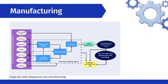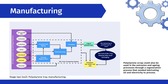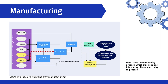Stage 2 — Polystyrene Tray Manufacturing. There were four processes in the trays' production system. In the extrusion and aging processes, the materials required are polystyrene granulate, cooling water, butane, lubricating oil, and electricity. Polystyrene scrap could also be used through a regeneration process requiring lubricating oil and electricity. Next is the thermoforming process, which also requires lubricating oil and electricity. Lastly, the finished product was packaged using LDPE and HDPE bags.